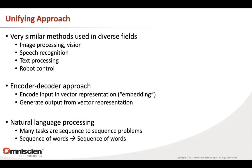It's also really nice that deep learning is a unifying approach that brings diverse fields together. Now image processing, speech recognition, text processing, and even robot control use very similar methodology. For the first time in a long time, researchers can talk to each other and cross-apply methods. You frequently see methods invented for vision being applied to text processing. Previously the technologies were very different.